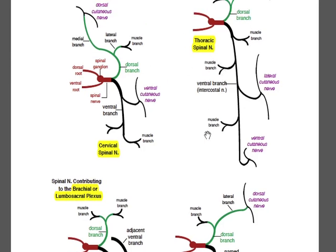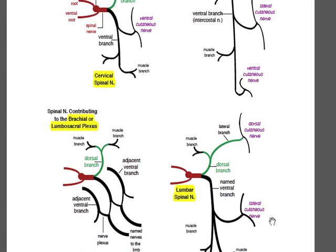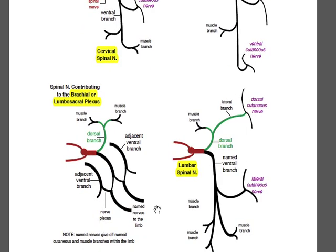The ventral branch is regionally variable. It always supplies hypaxial muscles and gives rise to one or two cutaneous nerves. The lateral cutaneous nerve in the thoracic and lumbar regions is a particularly significant series of nerves. In the case of limb innervation, ventral branches of spinal nerves immediately swap branches to create a brachial plexus for the thoracic limb and a lumbosacral plexus for the pelvic limb. Each plexus gives rise to main nerves that innervate the limb.